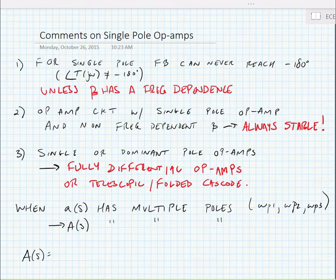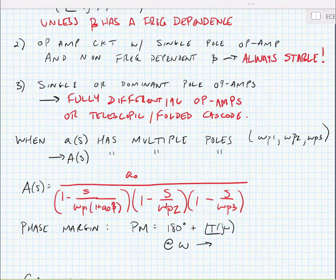Now, when the frequency response has multiple poles, let's look at an example. So here we have a three-pole op-amp. We have three poles in the denominator.